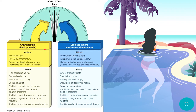Let's revisit the interaction of biotic potential and environmental resistance and how they affect population size. Biotic potential is the rate at which a population grows assuming unlimited resources — as long as there is food, water, shelter, and everything needed, the population will continuously increase. Examples of growth factors or biotic potential contributors include favorable light, favorable temperature, and favorable conditions overall, both abiotic and biotic.